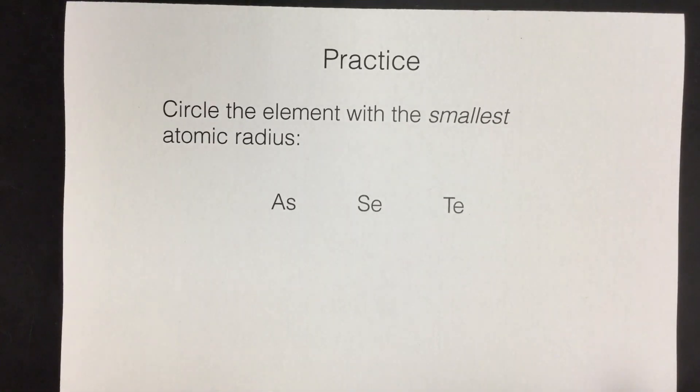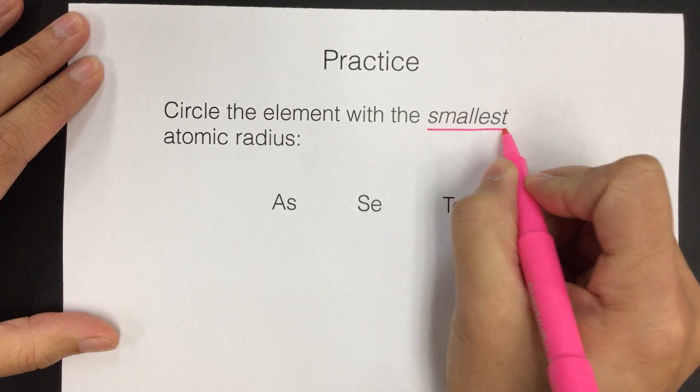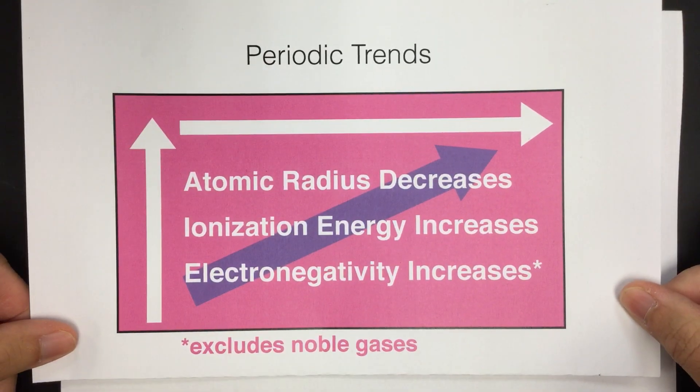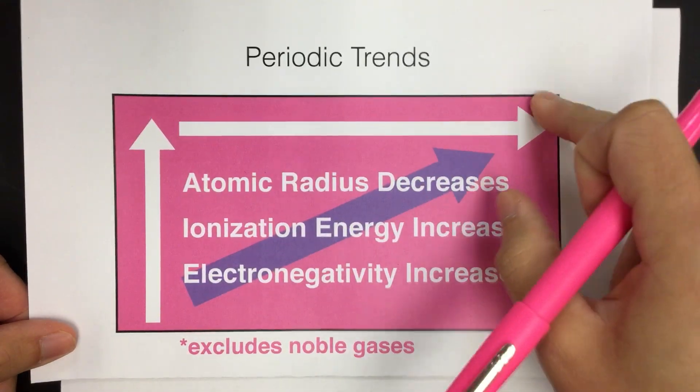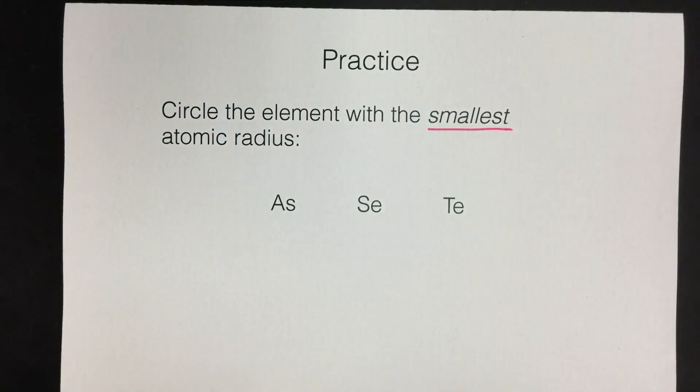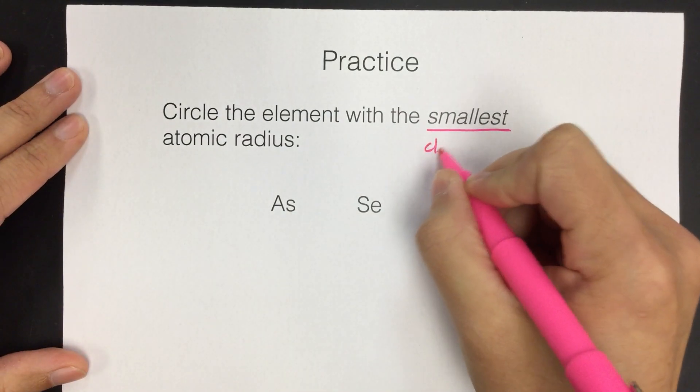All right, one more quick example. This time we'll pick the smallest. So we're looking at arsenic, selenium, and tellurium. And if we want the smallest this time, we're going to be looking at the opposite corner of the table. If we want small radius, we're going to look in this corner because it goes up and to the right. So we want to look at whatever's closest to helium this time.